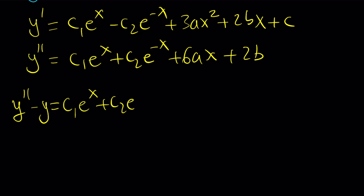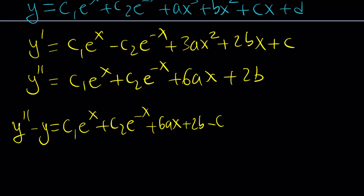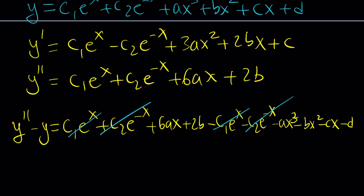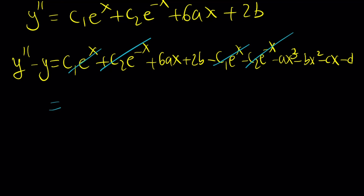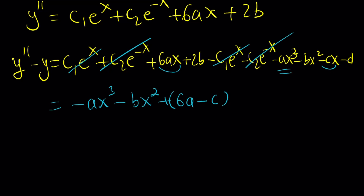Taking y double prime and subtracting y: we get c1 e to the x plus c2 e to the negative x plus 6ax plus 2b, minus c1 e to the x minus c2 e to the negative x minus ax cubed minus bx squared minus cx minus d. Notice the homogeneous terms cancel out, leaving us with the polynomial: negative ax cubed minus bx squared plus (6a minus c)x plus (2b minus d), and this is supposed to equal x cubed.